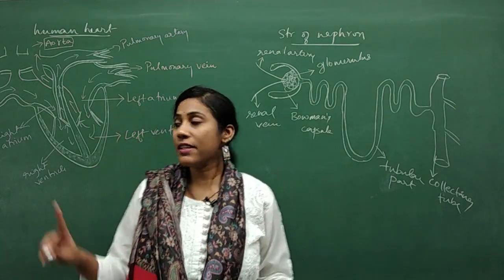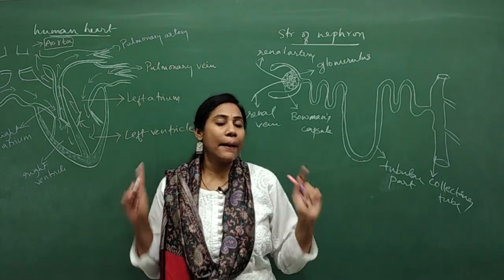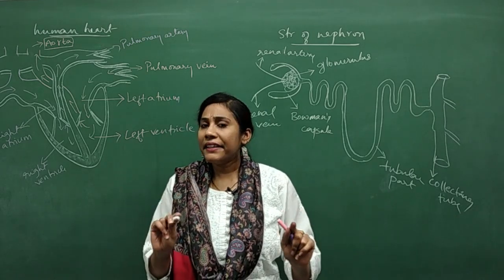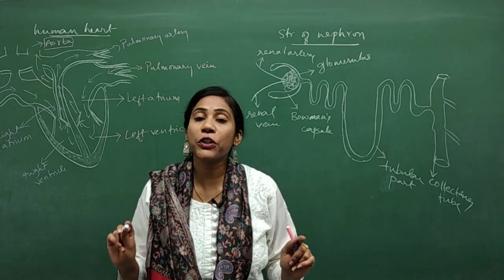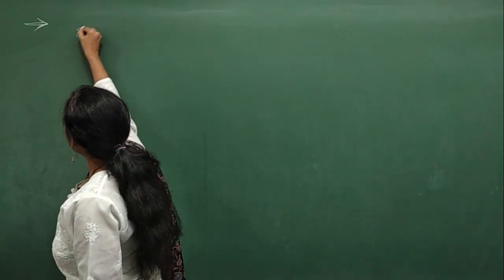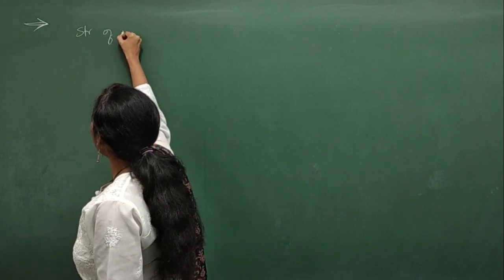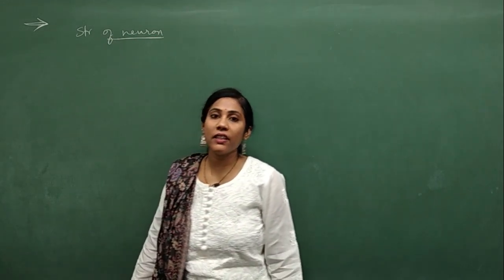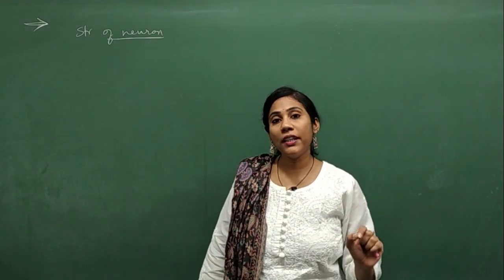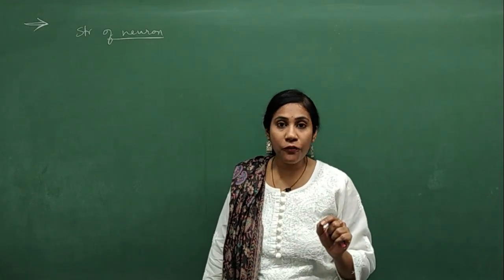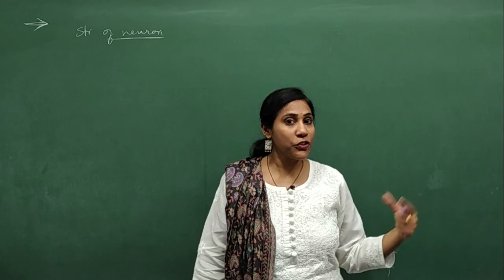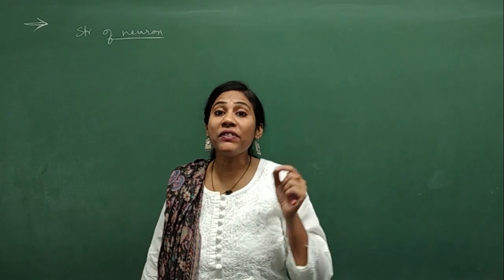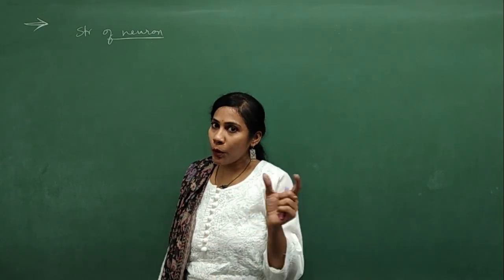These are the two important diagrams from Life Processes — the human heart and the nephron. At least one diagram will compulsorily be asked from these two. Now we go to the diagrams for the chapter Control and Coordination. Don't confuse nephron and neuron: the nephron is the structural and functional unit of the kidneys, while the neuron is the functional unit of the nervous system.